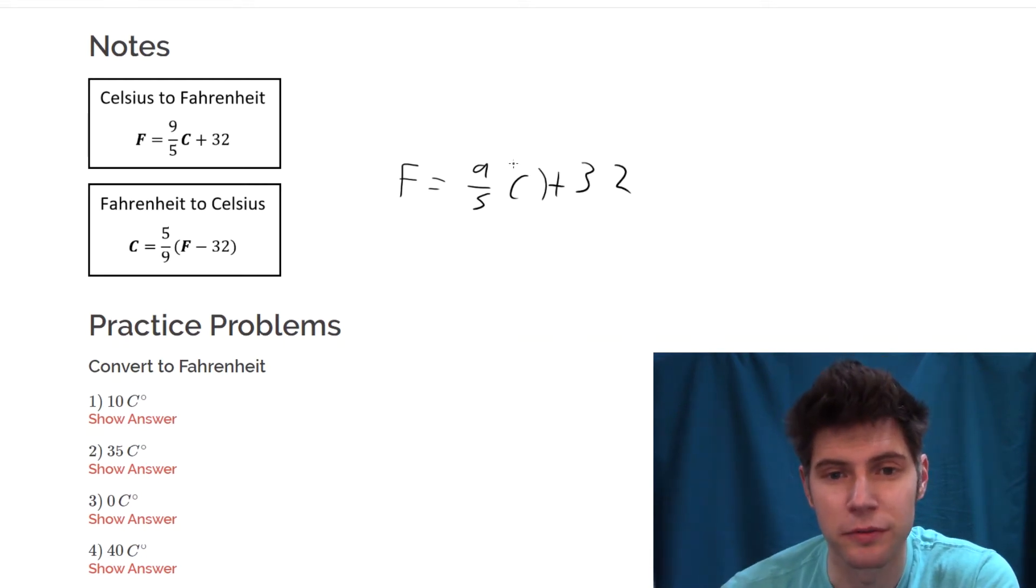All we have to do is plug in for C, and we're going to plug in 10. So F equals nine-fifths times 10 plus 32.